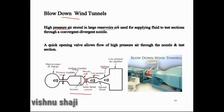High pressure air stored in a large reservoir is used for supplying fluid to the test section through a convergent-divergent nozzle. A quick opening valve allows flow of high pressure air through the nozzle and test section.